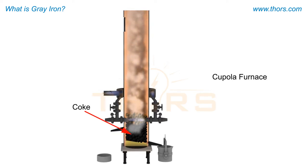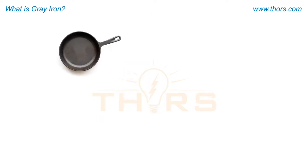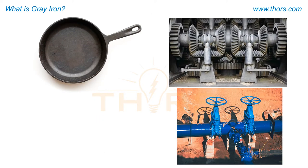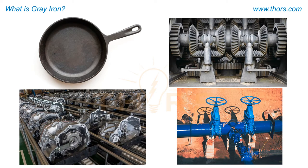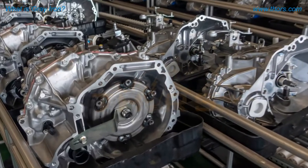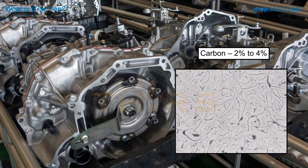Today, cast iron is used in various applications, ranging from cookware, pipes, machinery, and automotive parts such as cylinder blocks and gear boxes. Cast iron is an iron-carbon alloy that contains 2% to 4% carbon.